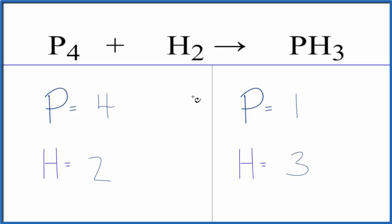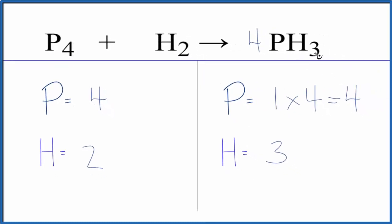Probably the best thing to do is balance the phosphorus atoms first and see what happens. We put a four here. One times four would give us four phosphorus atoms and those would be balanced. Then three times the four.